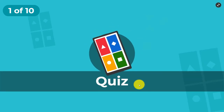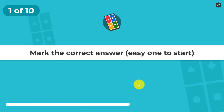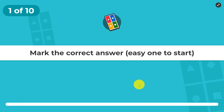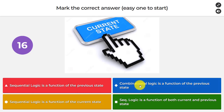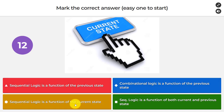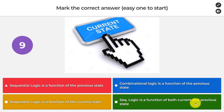In this Kahoot, we'll have 10 questions. The first is: mark the correct answer, and this is an easy one to start. Sequential Logic is a function of the previous state. Combinational Logic is a function of the previous state. Sequential Logic is a function of the current state. Sequential Logic is a function of both current and previous state.